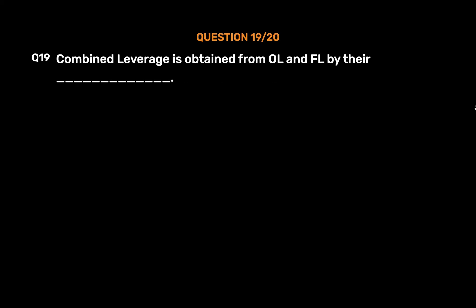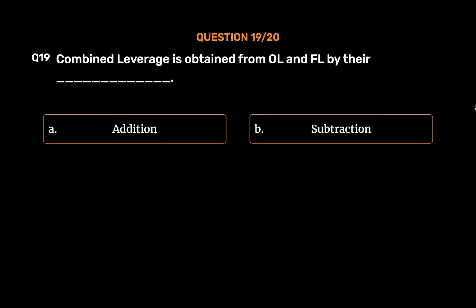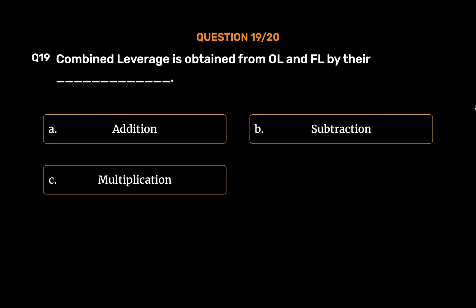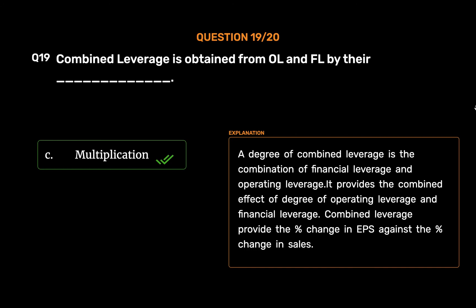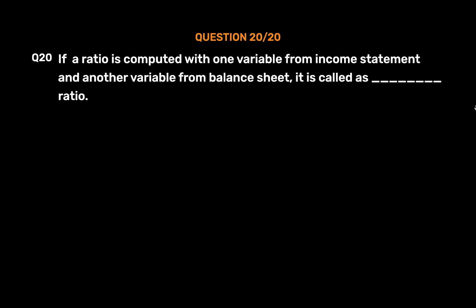Question number 19. Combined leverage is obtained from Operating Leverage (OL) and Financial Leverage (FL) by their: Option A: Addition. Option B: Subtraction. Option C: Multiplication. Option D: Any of these. The correct answer is Option C: Multiplication. A degree of combined leverage is the combination of financial leverage and operating leverage, providing the combined effect of both. Combined leverage measures the percent change in EPS against the percent change in sales.